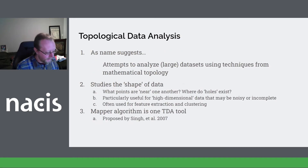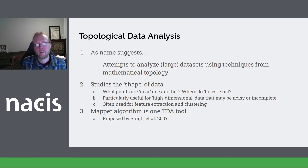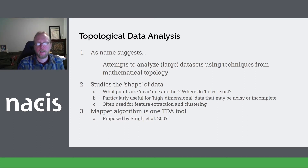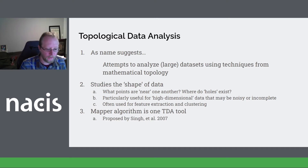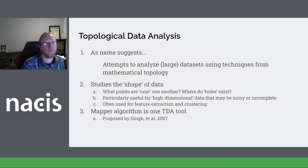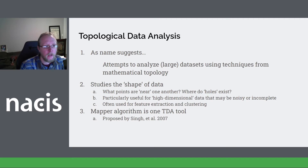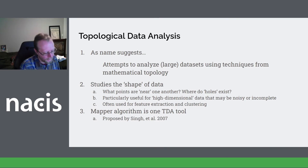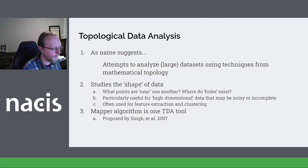As the name suggests, topological data analysis attempts to analyze large data sets using techniques from mathematical topology. It was originally a move to use algebraic topology on extremely large and diverse data sets. It's now expanded beyond that, but the core of it is to study the shape of data — what points are near one another, where do holes exist — the idea being that since topology is really good at that, this might be useful for high dimensional data that may be noisy or incomplete. The Mapper algorithm specifically was developed by Singh et al. in 2007.